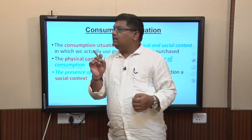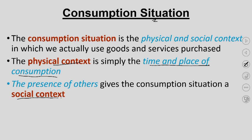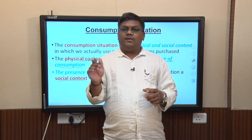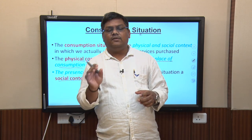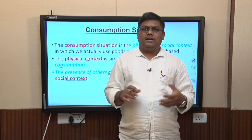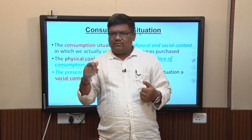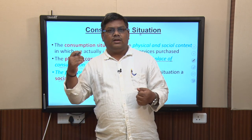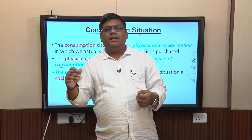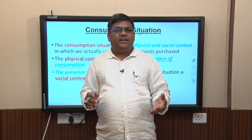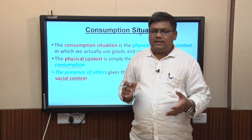Another part of the consumption situation is the social context — who is around when you are consuming. Think of two situations: going out with friends for dinner versus going with your parents. With friends, behavior is more relaxed — no five-course dinner, you order whatever you want. But with parents or a significant elder, the five-course meal follows — from soup to the main course to dessert. People around you matter; whether it is friends, family, a significant other, or acquaintances, that also shapes consumption.